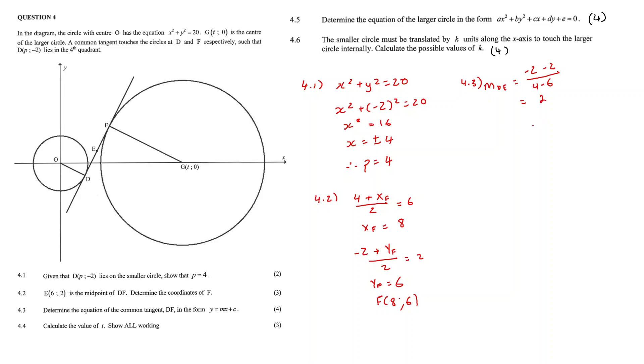We can then use either one of our values. In this case, we can use our value of D being 4 and negative 2. And we can say that negative 2 is equal to 2 being our gradient times by 4 plus c. And we get our c value to equal negative 10, making our equation 2x minus 10.